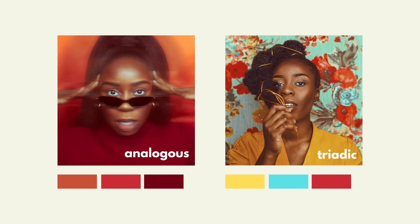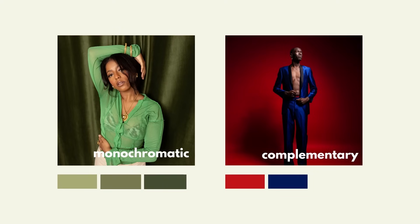Here we have two different examples. Analogous colors are next to each other on the color wheel, while triadic are equally spaced from each other. Monochromatic are colors within the same hue, and complementary are colors directly opposite each other. This is just an example of what these colors look like and how you can utilize them in practice for your portraits.